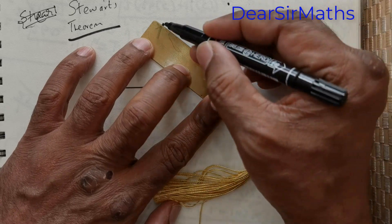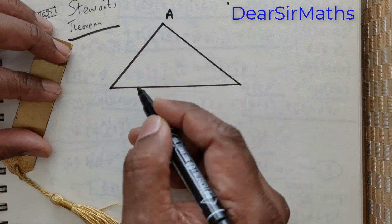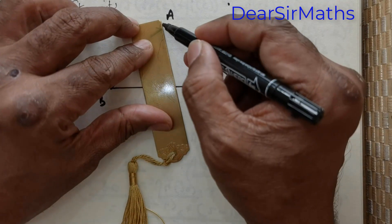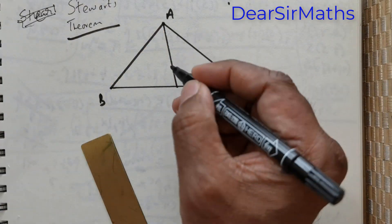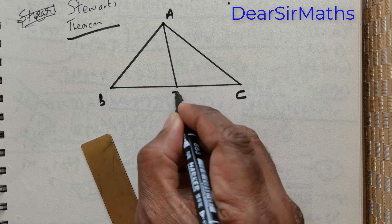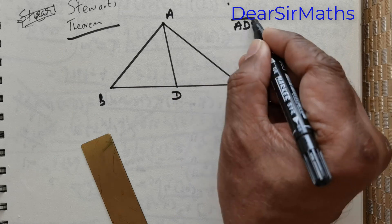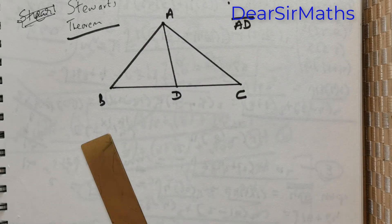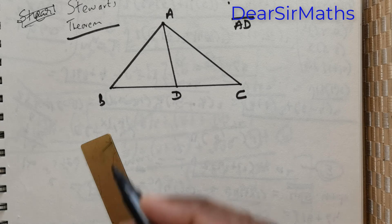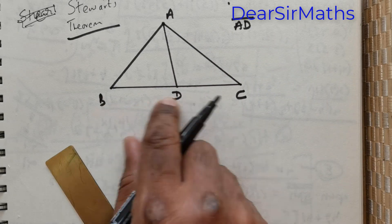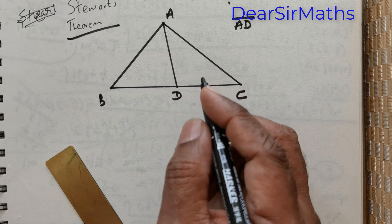So we have a triangle with vertices A, B, and C. Now this is a line segment — it is not a median, it is a line segment drawn from a vertex to the opposite side. Let me take this point as D. In the previous problem, AD was the median. But in this case AD is not the median, it is just a line segment, and D is not the midpoint. D is a point on BC.